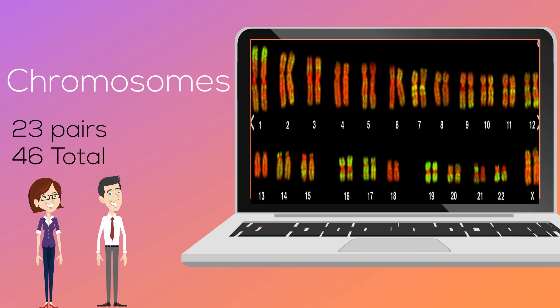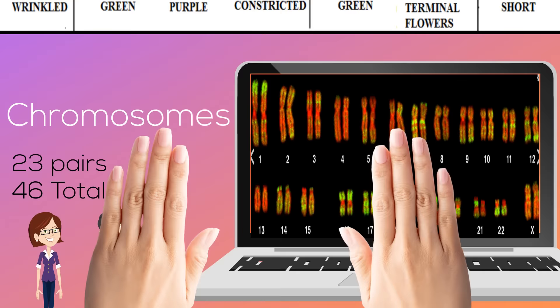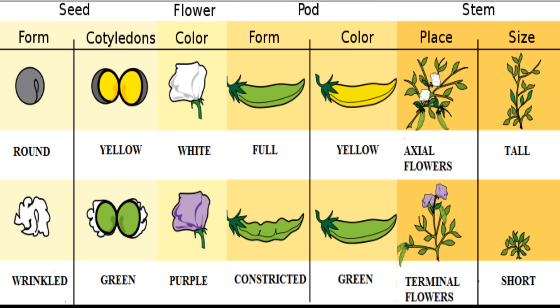Let's go back to Mendel and his pea plants. Notice that for each trait, there are different forms. The color of the flower can be white or purple. The pea plant can be tall or short. For all seven traits, each trait has a different form. These would be examples of alleles — different forms of the same gene.